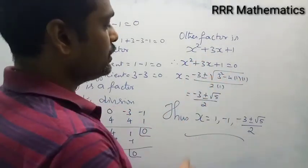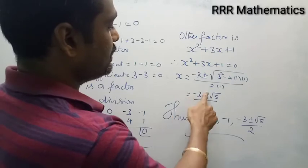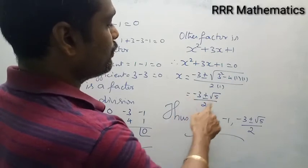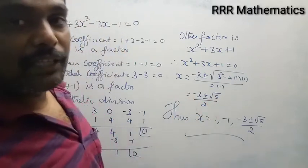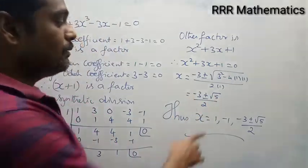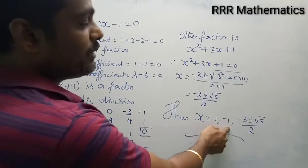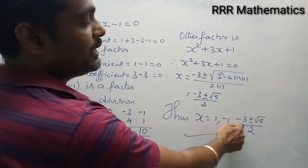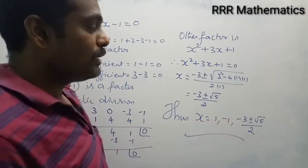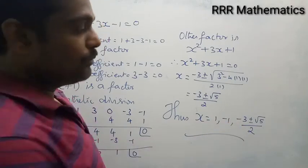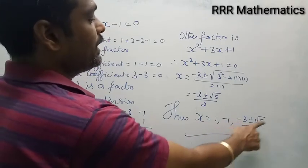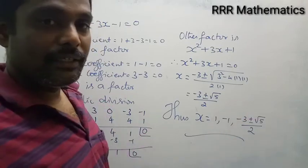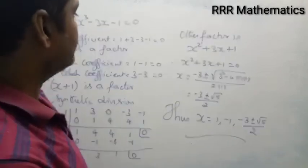When we equate to 0, we get (-3 ± √5) / 2. So the complete solution is x = 1, -1, (-3 + √5)/2, (-3 - √5)/2.